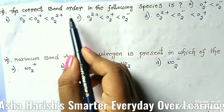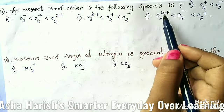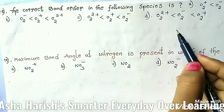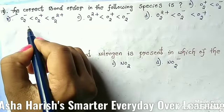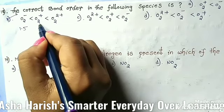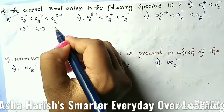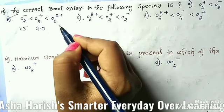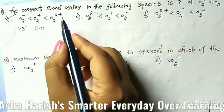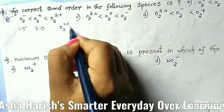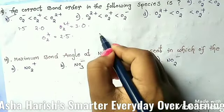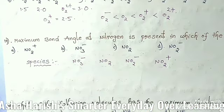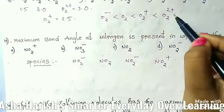Question 18: based on the previous calculations, the correct bond order sequence. For option B: O2⁻ has bond order 1.5, O2 has 2.0, O2+ has 2.5, and O2²⁺ has 3.0. The correct increasing order is O2⁻ < O2 < O2+ < O2²⁺. Option B is correct.